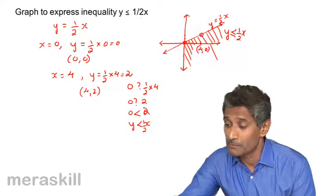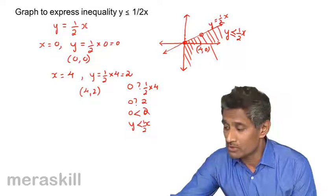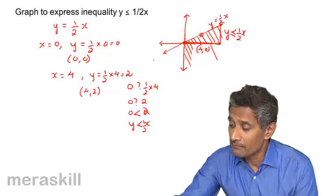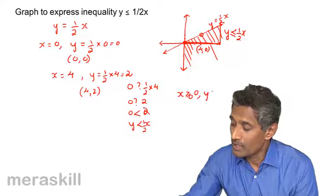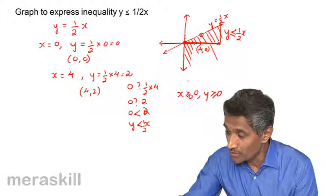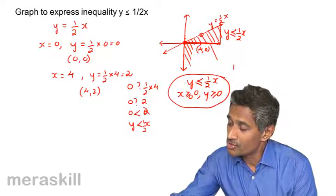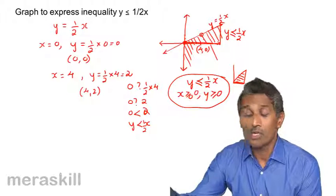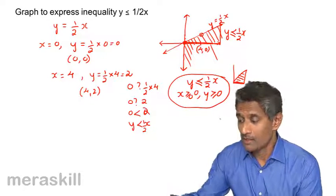Again, if there is an additional constraint such as x greater than or equal to 0, only this triangular region will be included. If we also add y greater than or equal to 0 along with y less than or equal to half x, we shade just this part in the first quadrant — not beyond. This is how we plot the line and identify the required region.